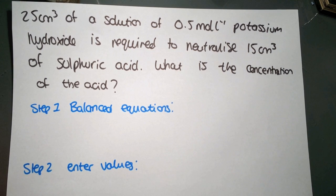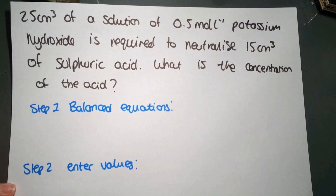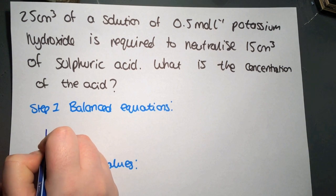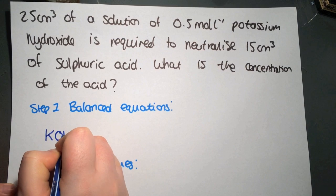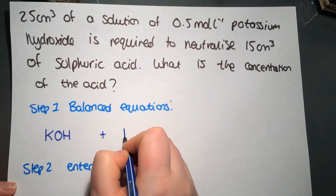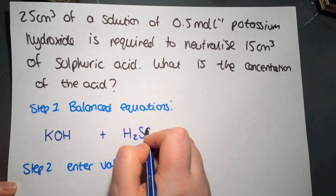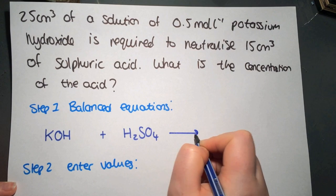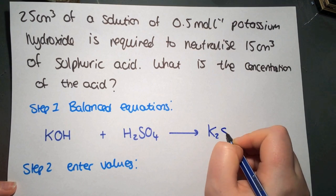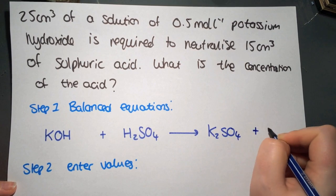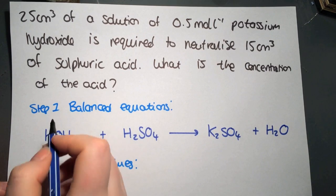So we're trying another example using the same approach. We need to write out the balanced equation. We have potassium hydroxide this time which is KOH. We have sulfuric acid H2SO4 to give us K2SO4 plus water. And we need to balance.